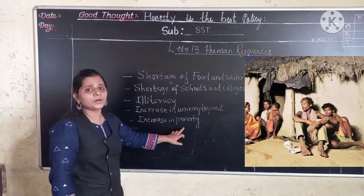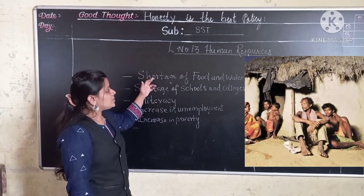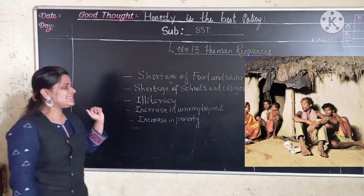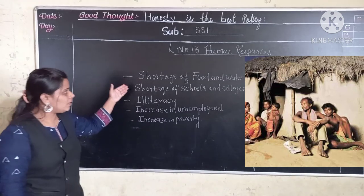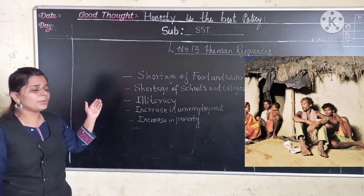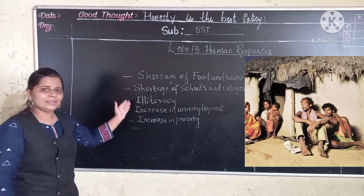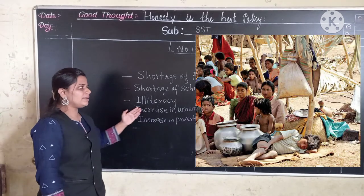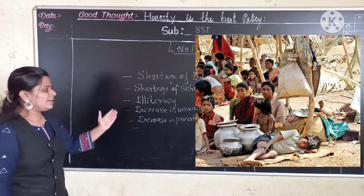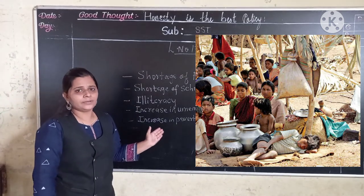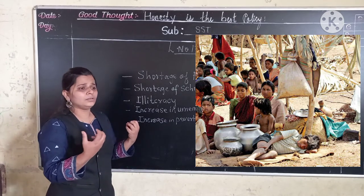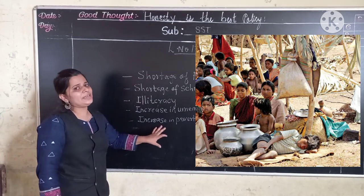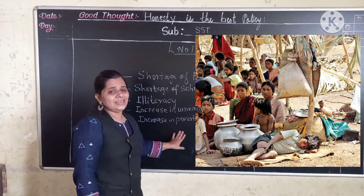The last problem we discussed is the increase in poverty. First we discussed shortage of food and water, shortage of schools and colleges, illiteracy, and increase in unemployment. If the people will not get all these — will not be educated, will not get proper food and water — this will increase poverty. You can see in the picture the faces of children showing they are in poverty. They will not get enough food to eat, they will not be educated, they will not go to school. Because of ever increasing population, there will be an increase in poverty.